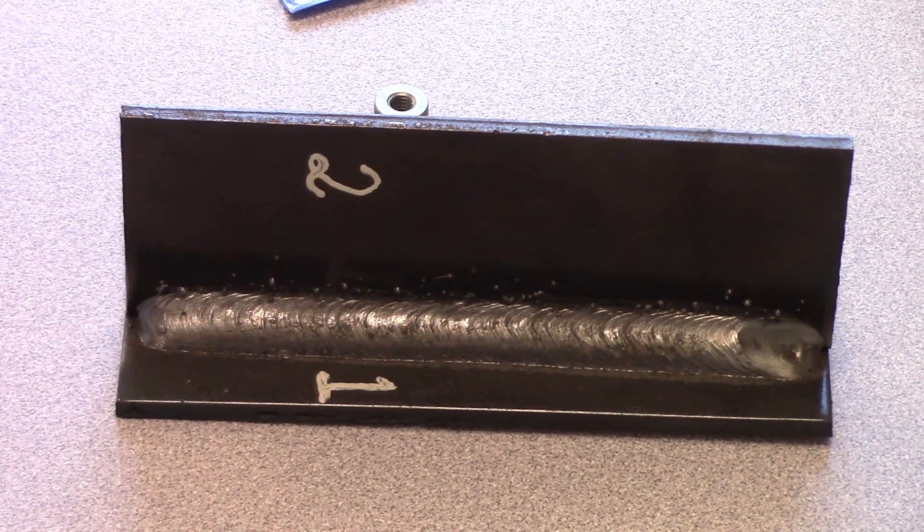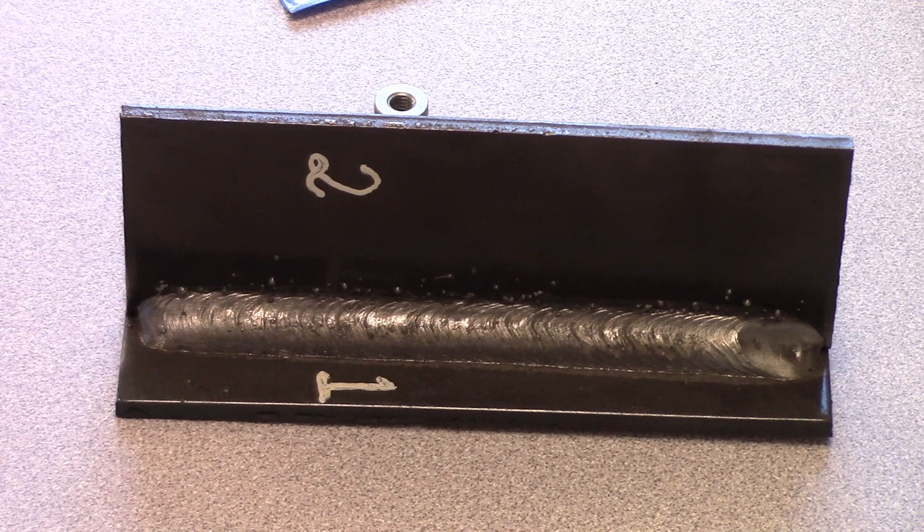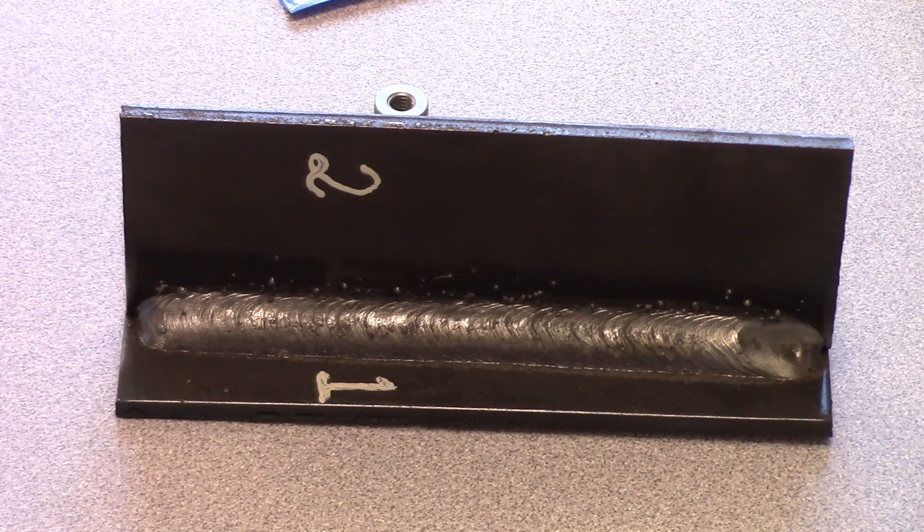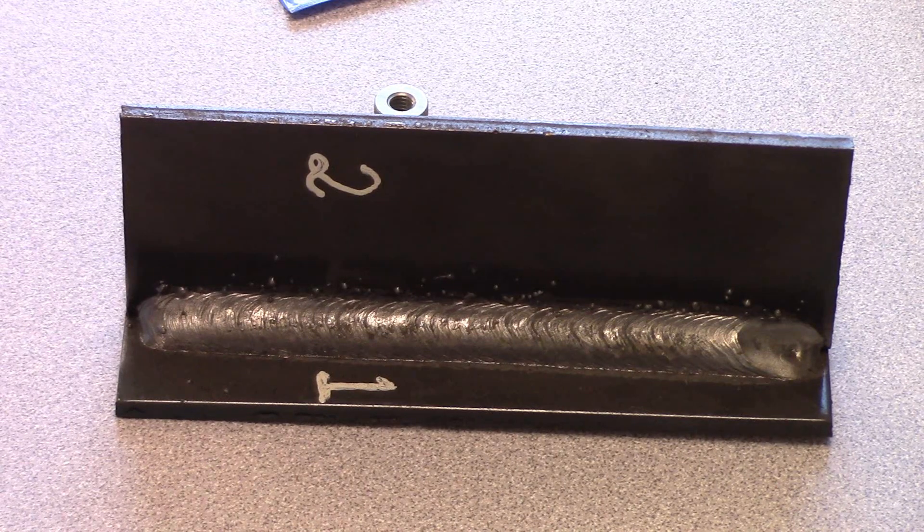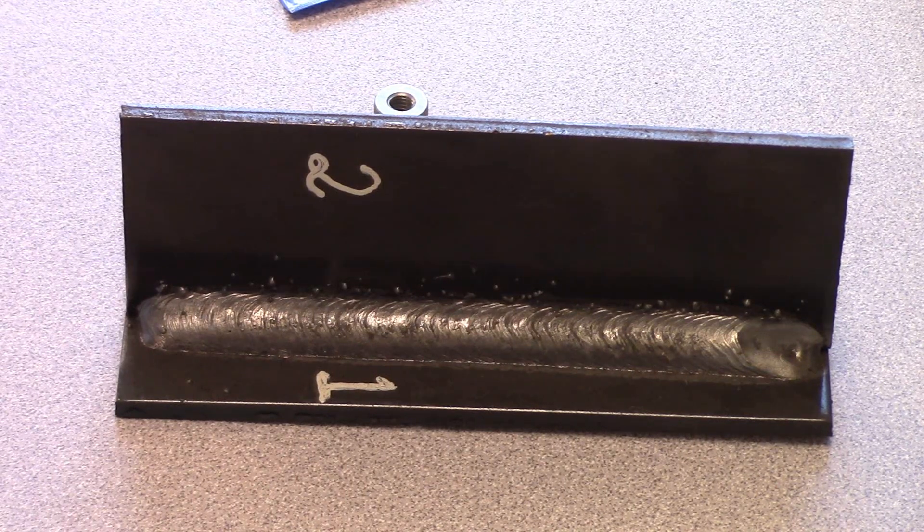Okay so this is a T joint we did a fillet weld on on a robot. You can see leg size one, leg size two. Looks pretty good except for that spatter. I don't know what the heck we had going on there. Maybe a bad angle or something. But now we'll set it up and I'll show you how to measure.